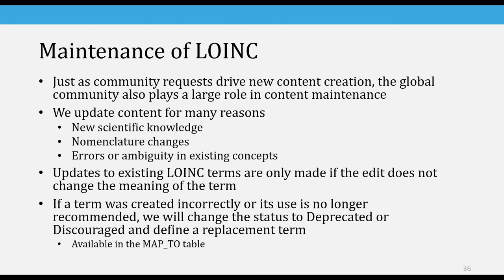Maintenance of LOINC also relies heavily on the user community. Sometimes we find out about changes in nomenclature or scientific knowledge and update terms, but oftentimes it's users who will send a message saying the nomenclature has changed or that a term is ambiguous — then we'll do research and make updates as necessary. We only update an individual term if the edit doesn't change the meaning of the term. But if it was created incorrectly or is no longer recommended, then instead of updating it, we change the status to deprecated or discouraged. We'll map to either an existing term that's more appropriate, or create a new term, and those maps are available in the MAP2 table in the distribution.